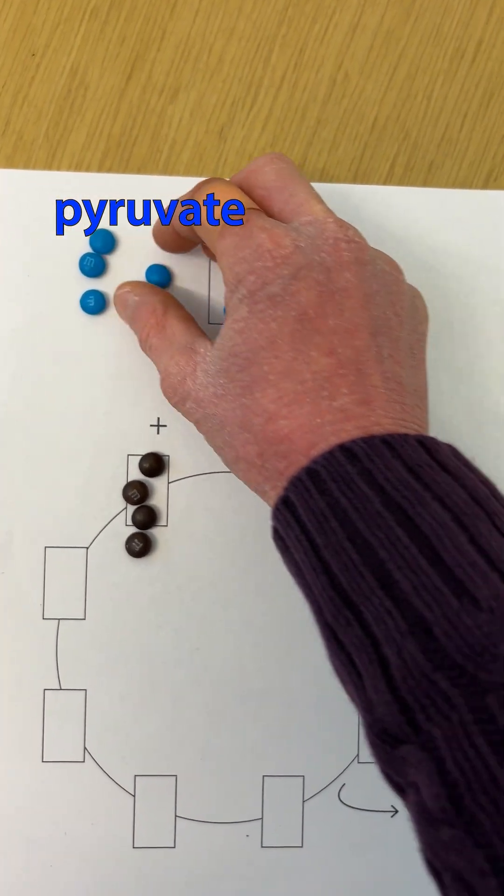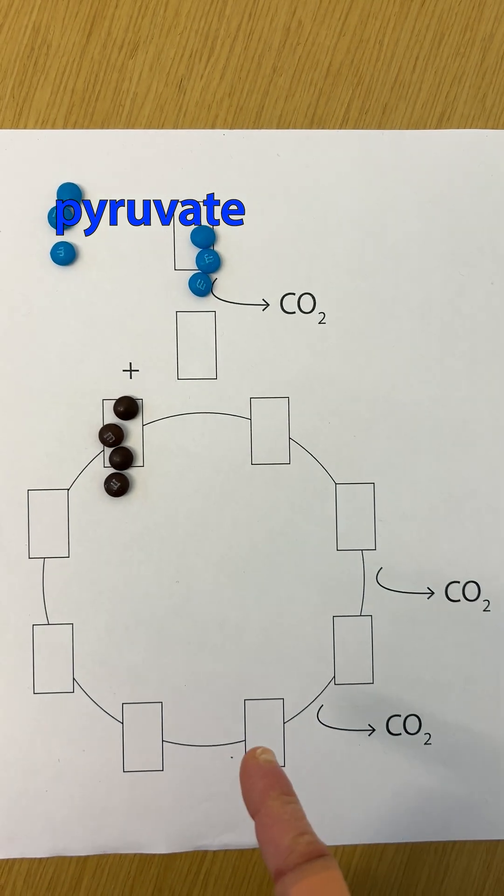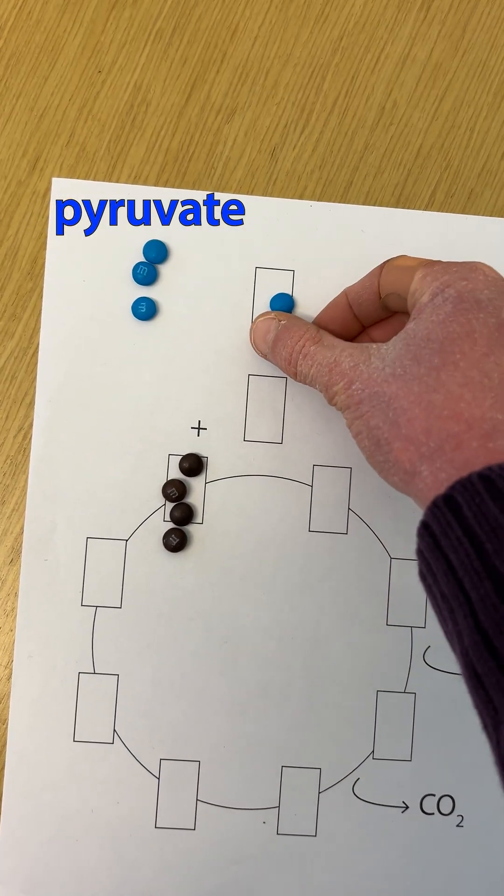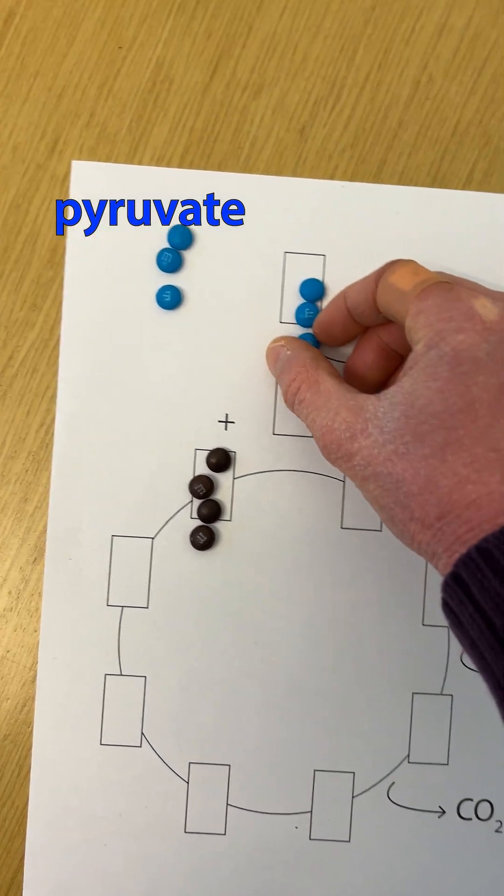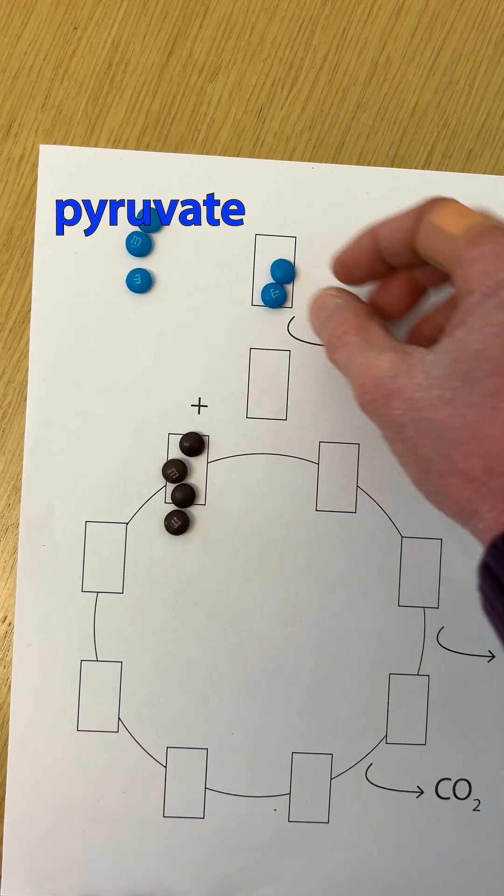Only two of the carbons from pyruvate are actually going to enter the citric acid cycle. Before we can get these into the cycle, we first need to kick off one of these carbons as CO2.